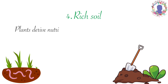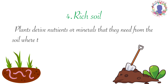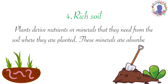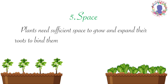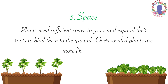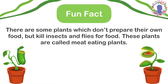The plants should be around a little wind to help sustain their structural components. Fourth, rich soil. Plants derive nutrients or minerals that they need from the soil where they are planted. These minerals are absorbed by the roots. Fifth, space. Plants need sufficient space to grow and expand their roots to bind them to the ground. Overcrowded plants are more likely to die. Here's one more fun fact: there are plants which don't prepare their own food but instead kill insects and flies for food. These plants are called meat-eating plants.